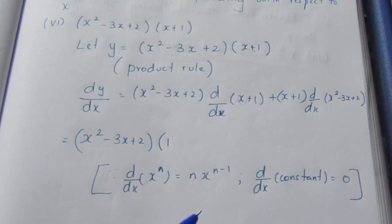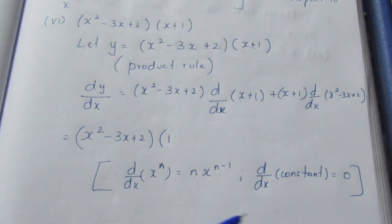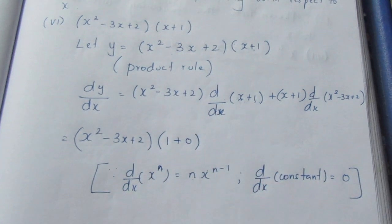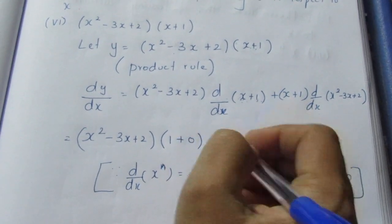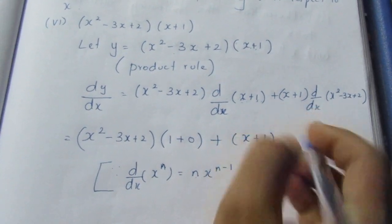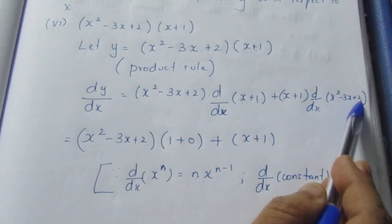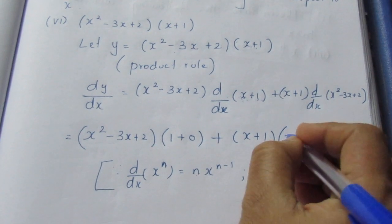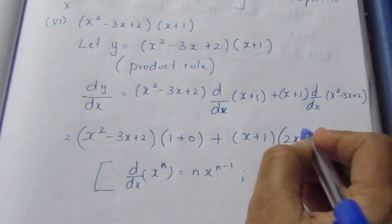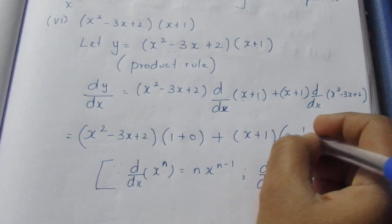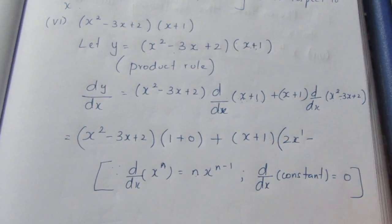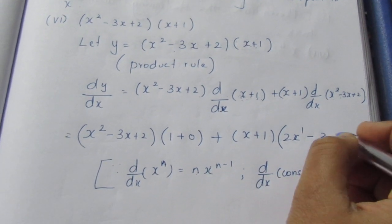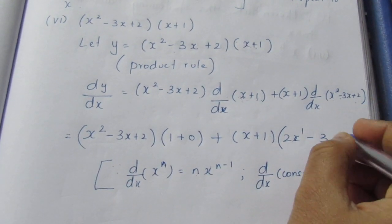We know that the differentiation of x is 1. For a constant term, the differentiation is 0. So for x² - 3x + 2, we get 2x - 3 + 0, which equals 2x - 3.